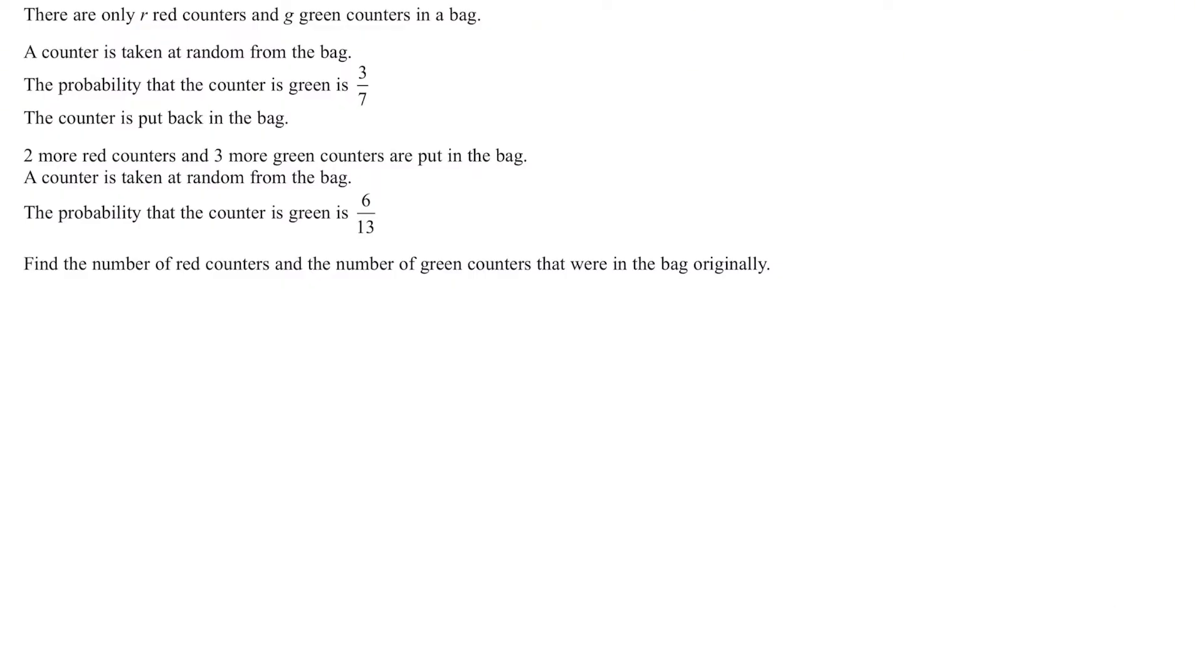In this question, we have red counters and green counters in a bag. We are told at first we take a random counter from the bag and the probability of it being green is 3/7. So immediately we can say the probability of it being red is 4/7. Then we put that counter back in the bag and add two more red counters and three more green counters. Now the probability of getting a green is 6/13, so the probability of getting a red is 7/13. We're asked to find the original number of each color in the bag.